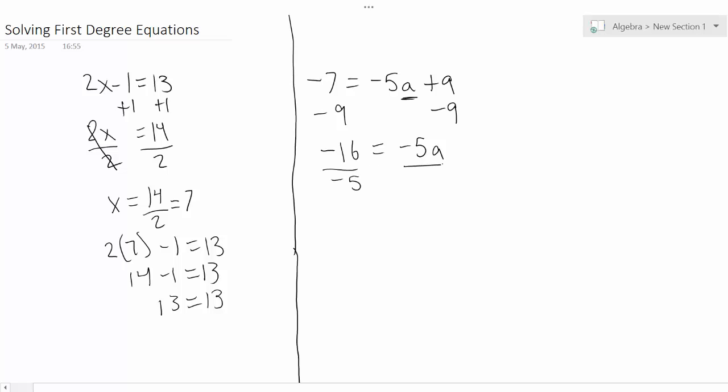Divide both sides by negative 5, and you're going to get 16 over 5 equals a. Okay, those two negatives make a positive.